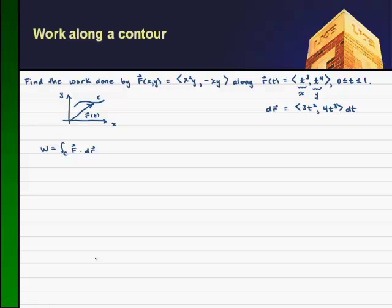And so dr ought to be this vector dt. So dr dt is this vector, just multiply both sides by dt. So I can change this contour integral as the integral from 0 to 1.